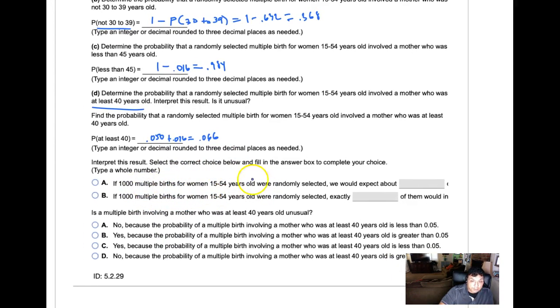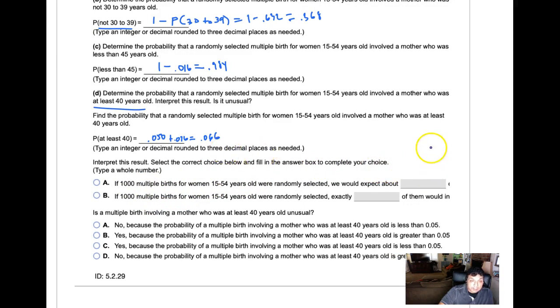What's the interpretation? If you had 1,000 births, we would expect about 66 to have multiple births where the mother is at least 40 years old. That's 0.066 times 1,000. Is this unusual? No, because it is greater than 5%, and something's unusual if it's less than a 5% chance of happening.